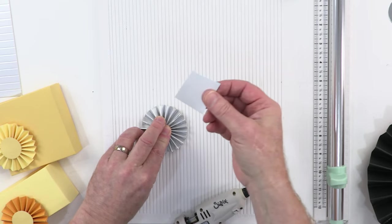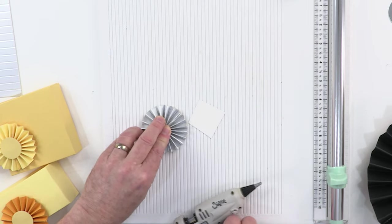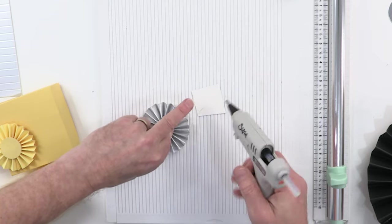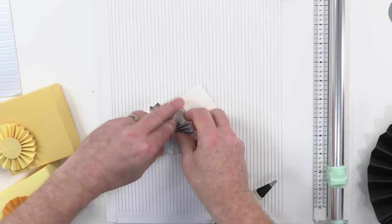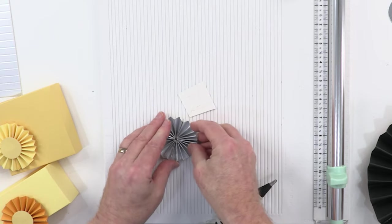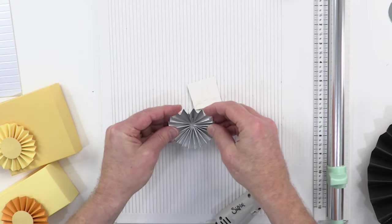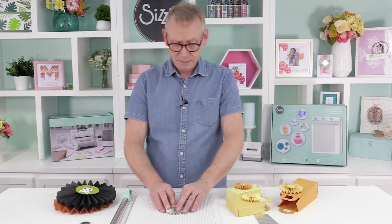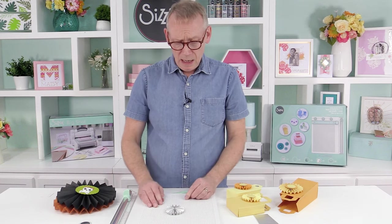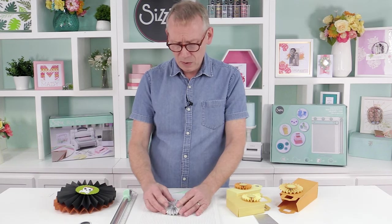Now this is a piece of scrap card, so I'm just going to apply some glue liberally to that, and then I can place the rosette before it dries onto the card. And there it is, all in place. You can see the scrap card on the back like so.